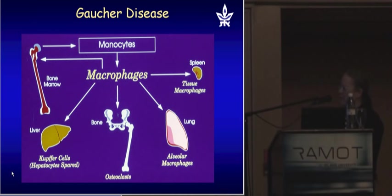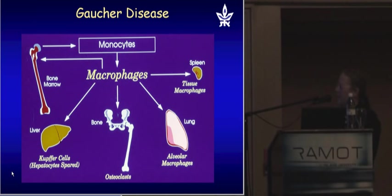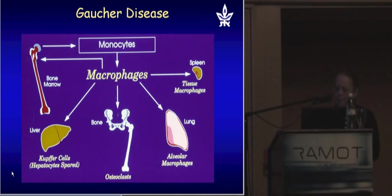Due to the accumulation of glucosylceramide, the patient may suffer from bone necrosis, pains, and fractures. They suffer from enlarged spleen and liver, and they have a significant decrease in platelet count and hemoglobin level. The disease is also associated with neurological disease.